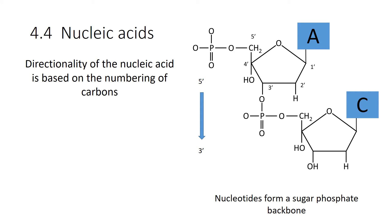You may have noticed that there's numbers associated with that top sugar up there. And you can see them 1 prime, 2 prime, 3 prime, 4 prime, and 5 prime. That little mark up there means prime. And that's just to separate the carbons that you would find in your base.